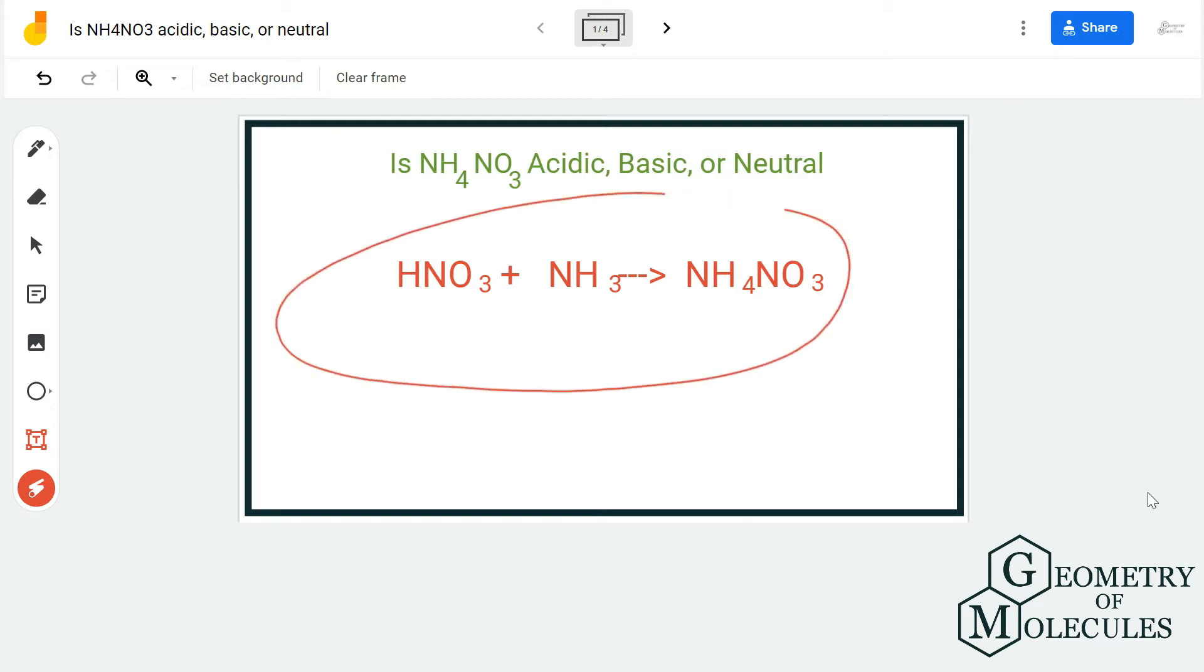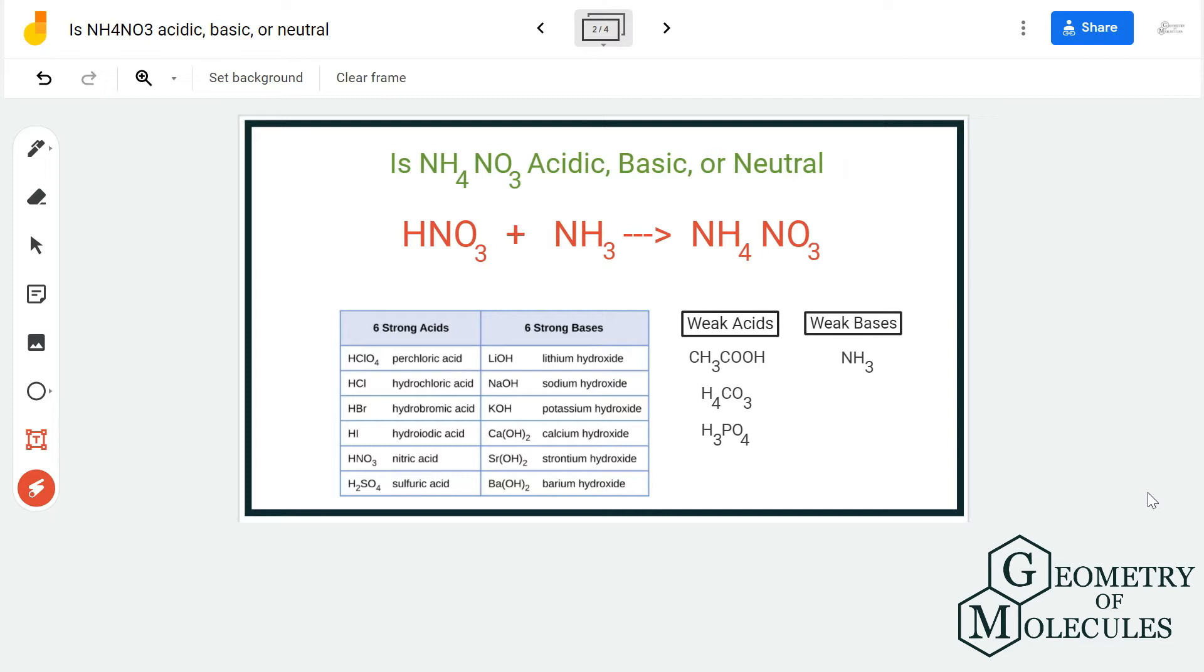It is made by using this reaction which is HNO3 plus NH3 which gives us NH4NO3. If you look at this equation, you can see that this compound is made up of one strong acid which is HNO3 and a weak base which is NH3.